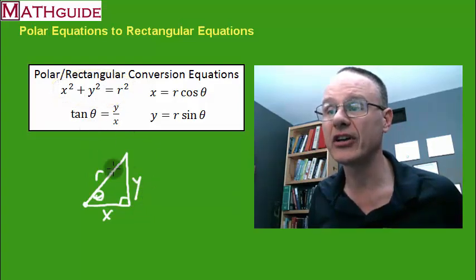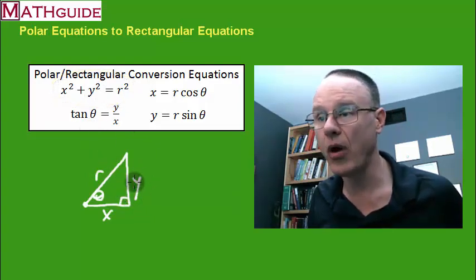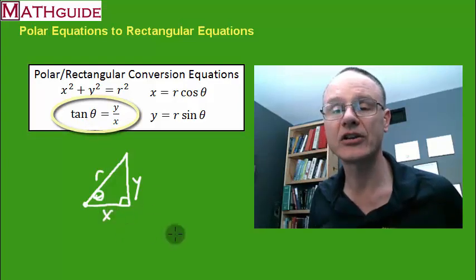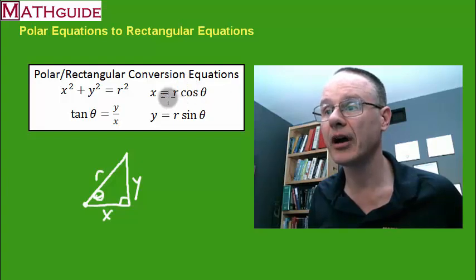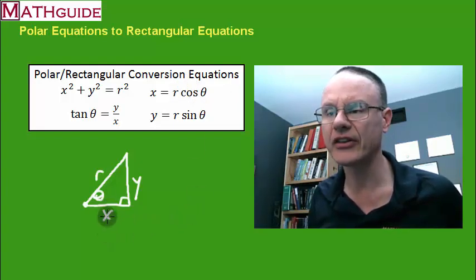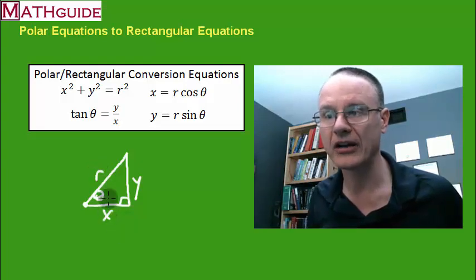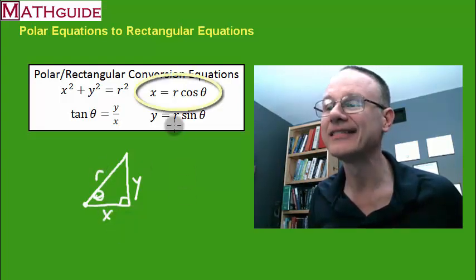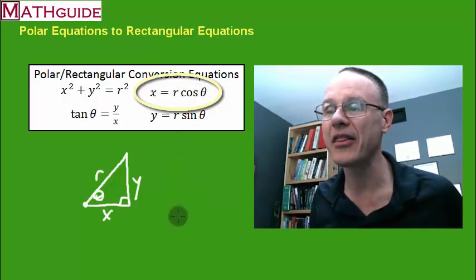You know that the definition of tangent is opposite y over adjacent x. That's the second equation. Our third equation, if you take the cosine of this triangle, it's adjacent over hypotenuse or x over r. If you multiply both sides by r, you get x equals r cosine theta.